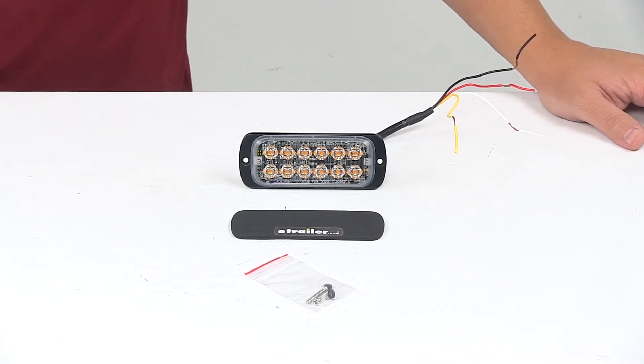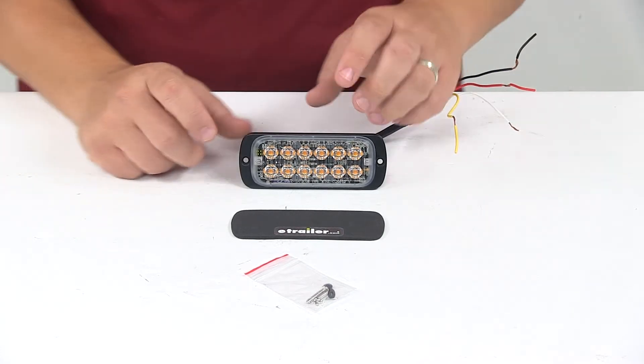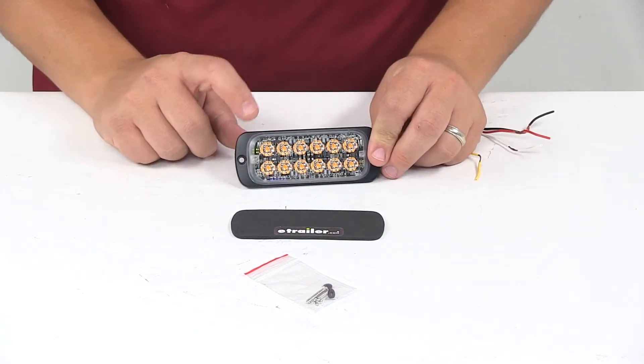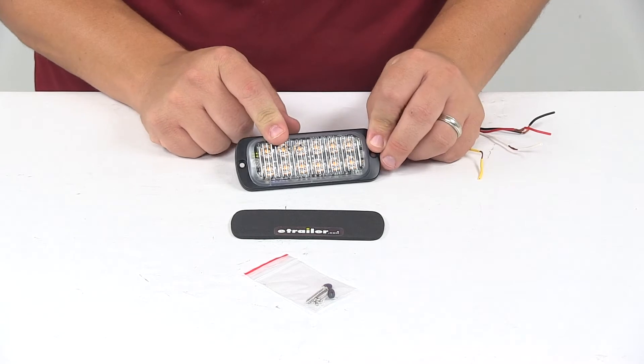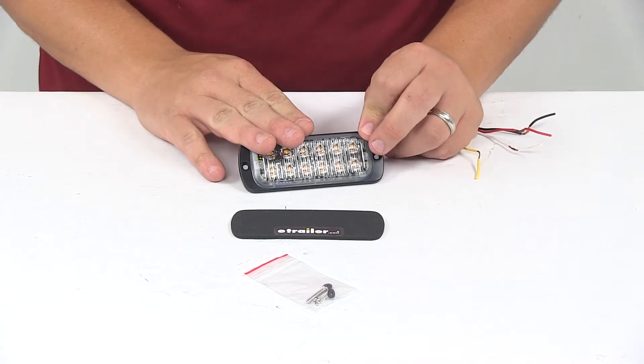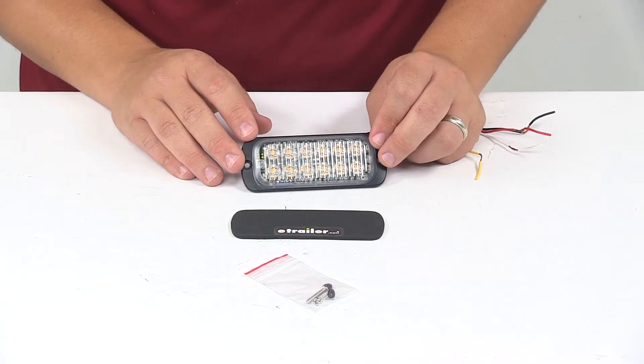This is ideal for work trucks, utility trucks, or trailers. This is a 12 to 24 volt strobe light that features 12 LEDs or diodes, and it features 25 flash patterns to choose from with alternating and synchronized functions.